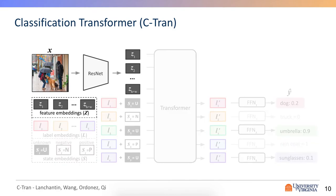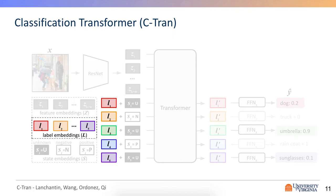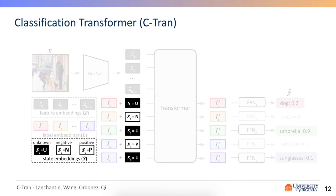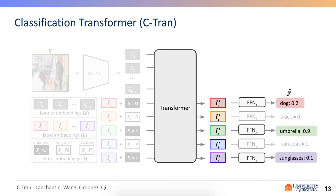So our approach consists of visual features from a convolutional neural network, learned label embeddings to represent all possible labels, and state embeddings to denote whether a label is unknown, known positive, or known negative prior to inference. A transformer encoder is then used to model the interactions between the labels and image features and predict the set of unknown or masked labels.